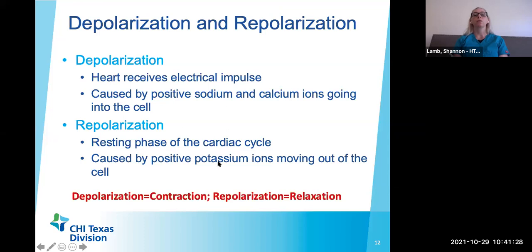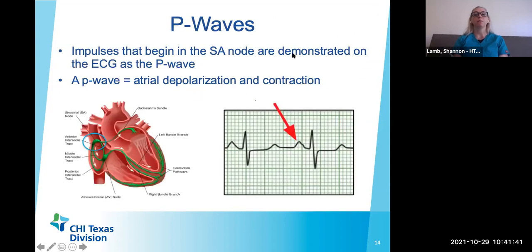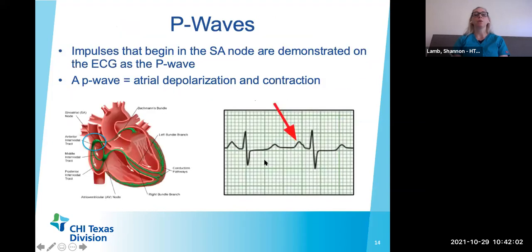We have different intervals: the PR interval, the QRS complex, and the QT interval. We also have different segments, with the ST segment being a very important area — if we see elevation or depression there, it can signal that our patient may be having some type of heart attack. Depolarization means that the heart is receiving the electrical impulse, causing a large change in electrical currency that shows up as a wave on your EKG — the P wave and QRS complex. Repolarization is the resting phase of the cardiac cycle, where the cell comes back to a resting state so it can depolarize once more; this is symbolized by our T waves on the EKG.